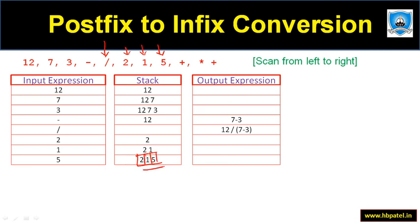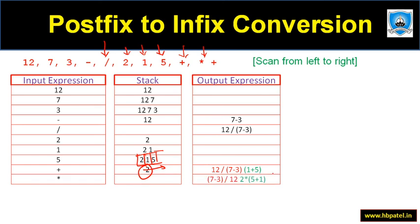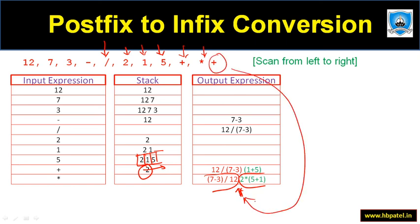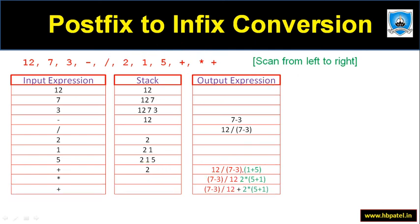Then we push 2, 1, and 5 onto the stack. The moment plus appears, we pop the top two — 1 and 5 — and add them: '1 + 5'. Then multiplication pops one more operand, giving '2 * (1 + 5)'. Now we have two separate expressions with no operator between them. Lastly, plus connects them, giving '12 / (7 - 3) + 2 * (1 + 5)'. This is how you convert a postfix expression into an infix expression.